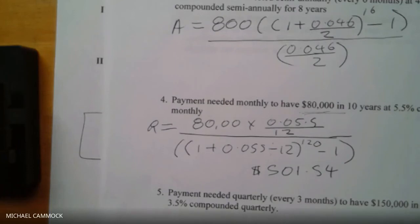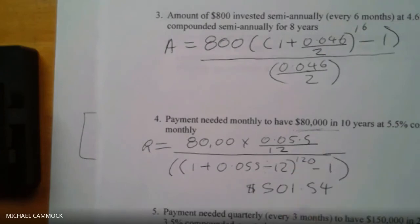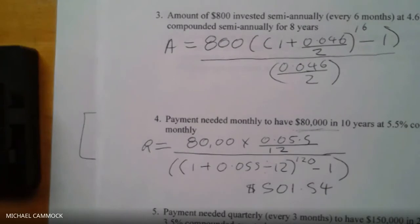The teacher explains what this means practically: if you want to buy an $80,000 BMW, you need to put $501.54 into the bank every month for 10 years at 5.5% to reach that amount. That's what these formulas are about.